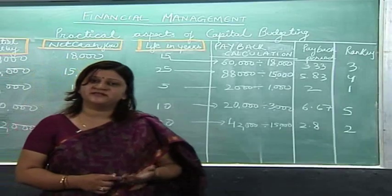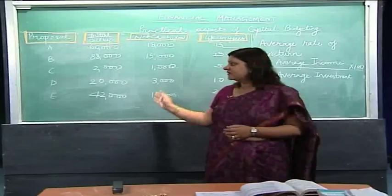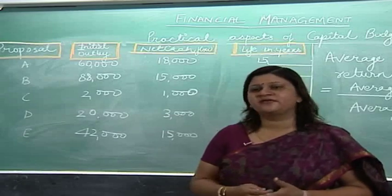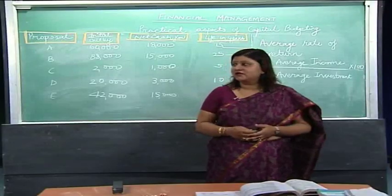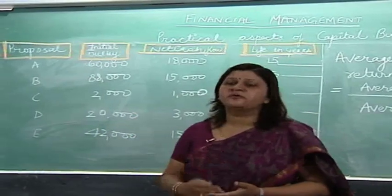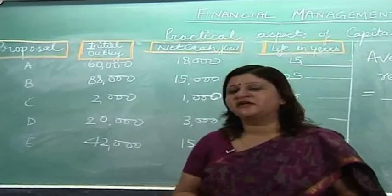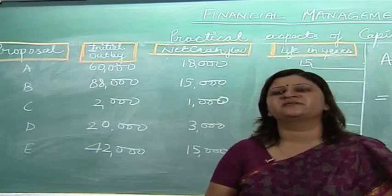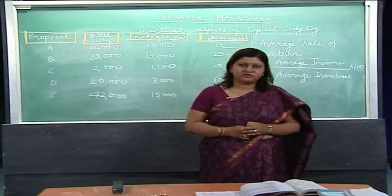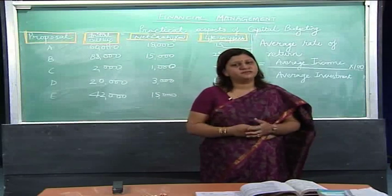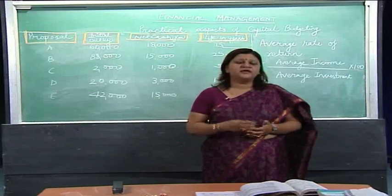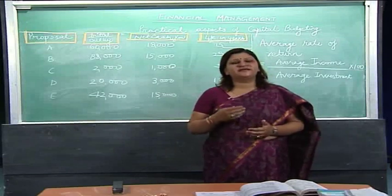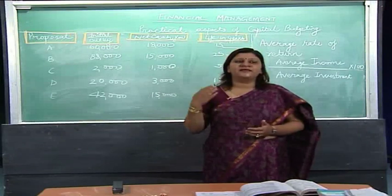Now we move to another technique: Average Rate of Return (ARR). Using the same figures for all five proposals, we compute the ARR and take our decision accordingly. When using rate of return, we accept the proposal where ARR is highest. As learned in previous lectures, accounting rate of return implies a rate of return based on accounting profit — it takes accounting profit into consideration in place of cash flows.